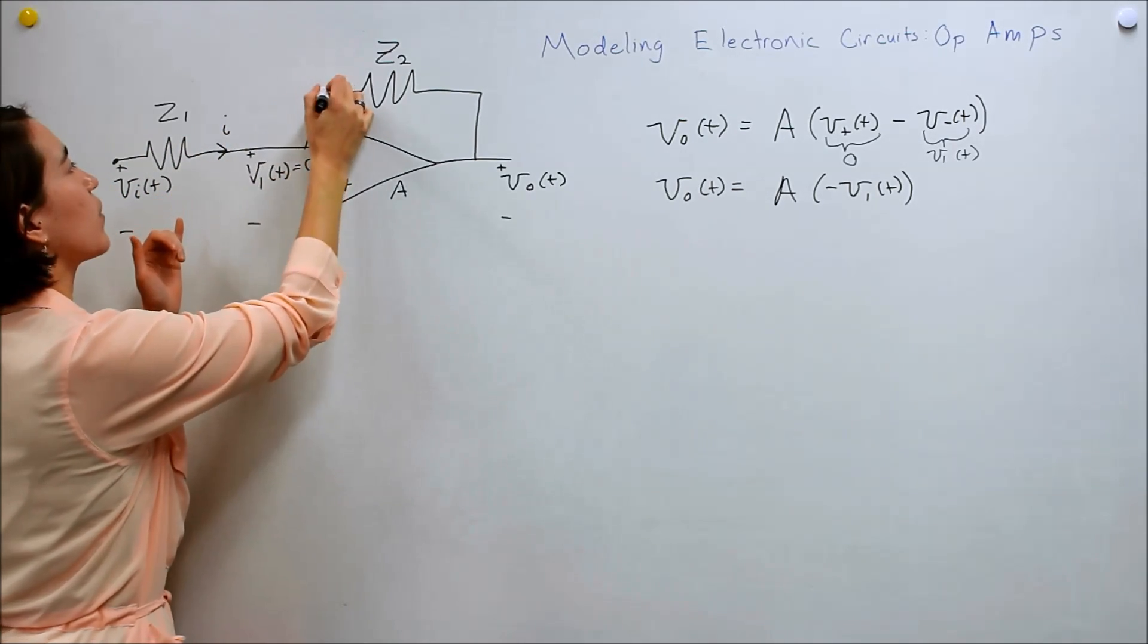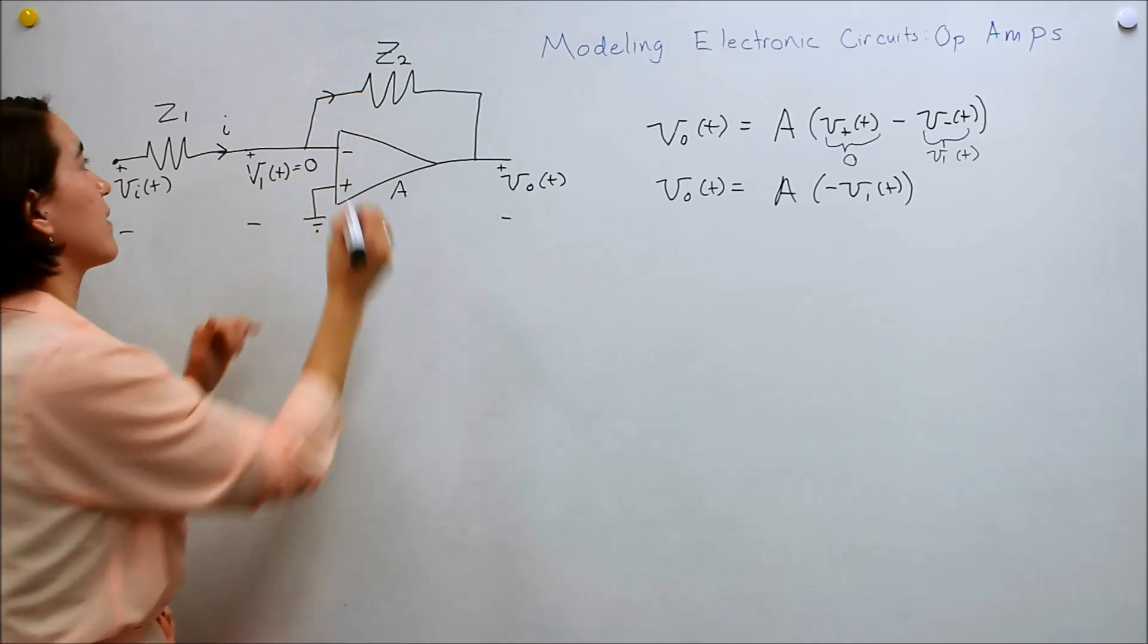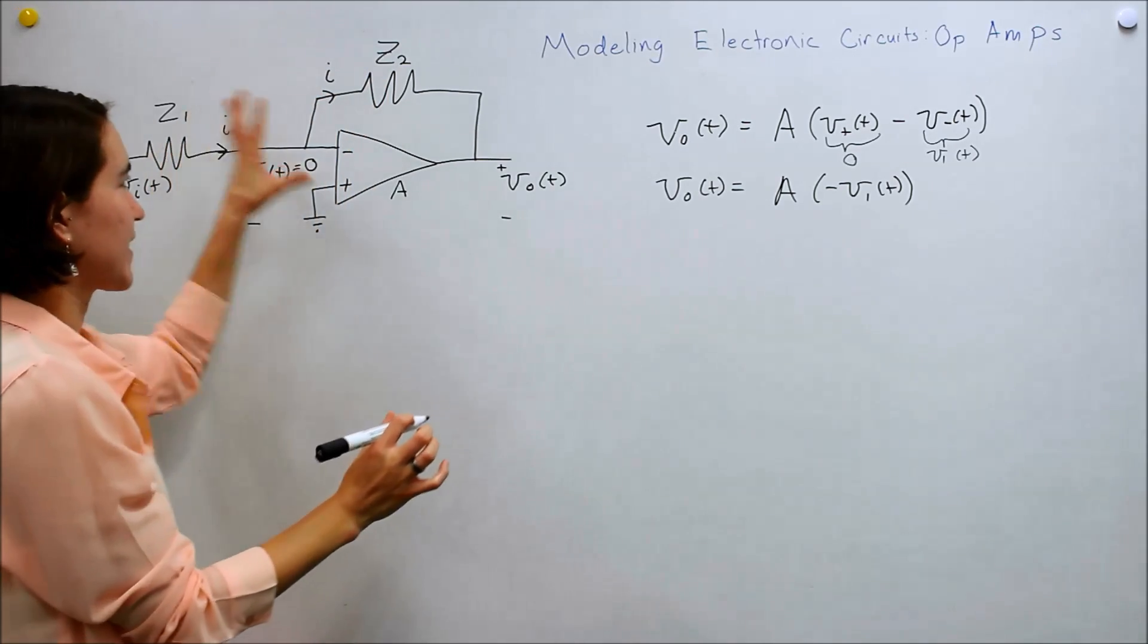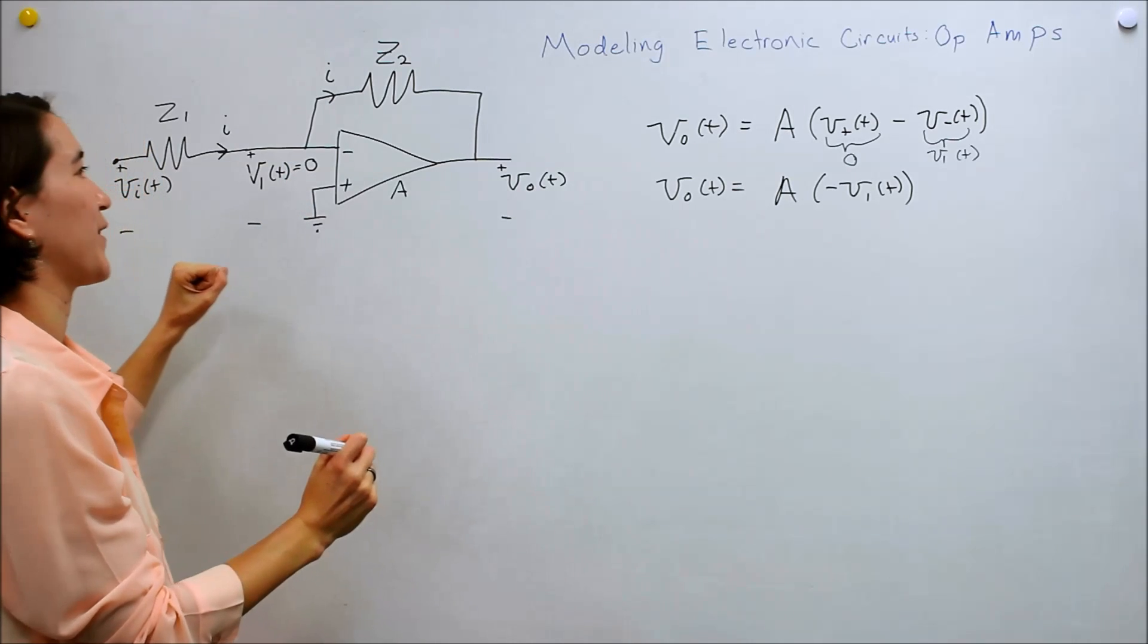and all of the current will go through the other impedance. So this is also I. So this is actually going to make everything a lot simpler for us as well.